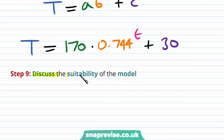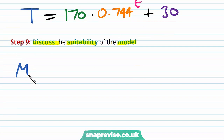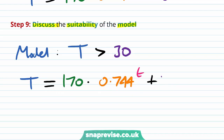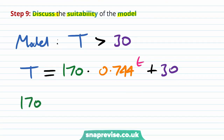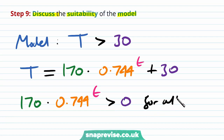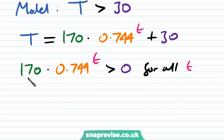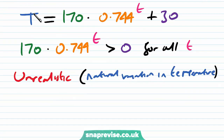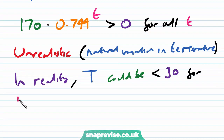The last step is to discuss the suitability of the model. Looking at our model and the long-term value, the temperature T will always be greater than 30 degrees, because 170 multiplied by 0.744 to the power of t is always strictly positive for all values of t. However, this is itself unrealistic because of natural variation in temperature due to surroundings. So in reality, it's possible for T to be less than 30 for later values of t.